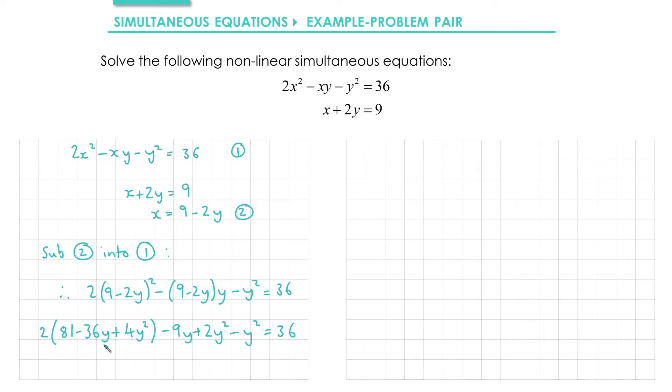Next up, we'll expand out these brackets. First we have 2 times 81, that's 162. We have 2 times negative 36y, that gives us negative 72y. And we have 2 times 4y², which gives us plus 8y². We'll leave all the other terms as they are for this line.